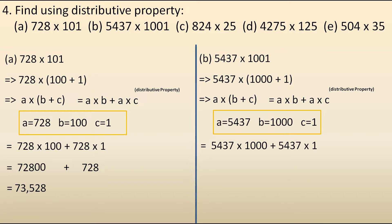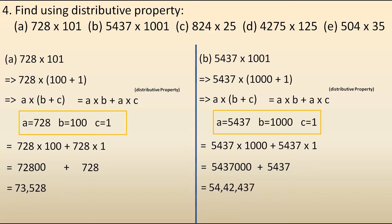Now we multiply 5,437 into 1,000, which gives 54,37,000, and 5,437 into 1 is 5,437. Now let's add — we get the answer as 54,42,437.